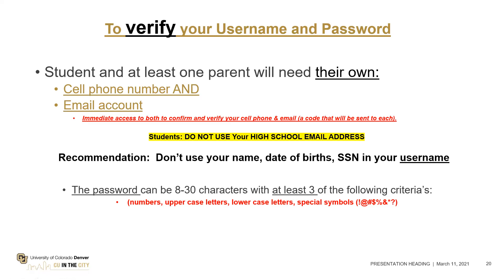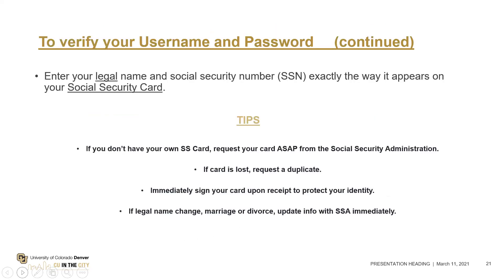Do not use your name, date of birth, or social security number in your username, because people trying to steal your identity can easily determine what your username is if you use identifying information. The password can be anywhere from eight to 30 characters, with at least three of the required credential types. Put your username and password in a safe place. The system will also verify your legal name as it is on your social security card — make sure the name you put on the FAFSA matches exactly what is on your social security card.